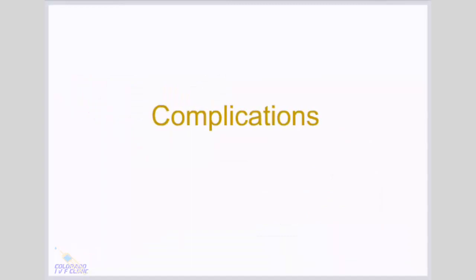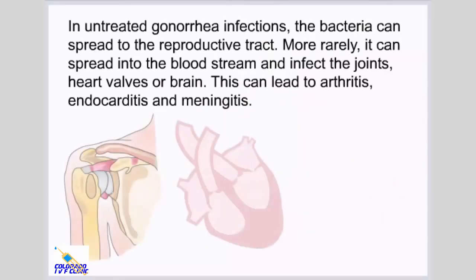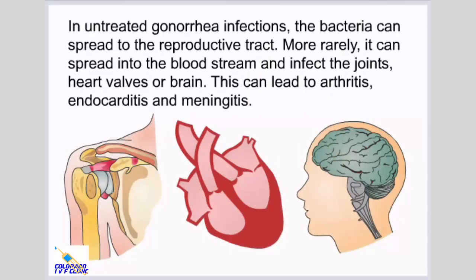Complications. Many complications can happen if gonorrhea is left untreated. In untreated gonorrhea infections, the bacteria can spread to the reproductive tract. More rarely, it can spread into the bloodstream and infect the joints, heart valves, or brain, leading to arthritis, endocarditis, and meningitis.